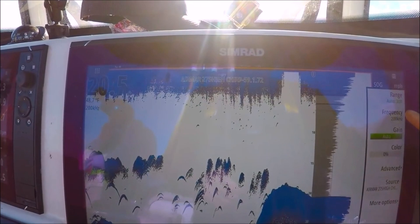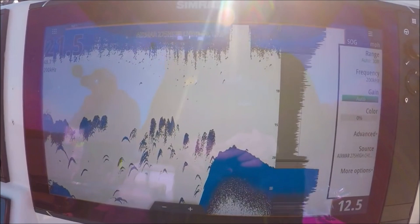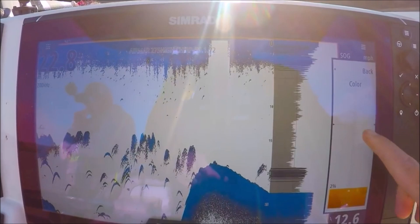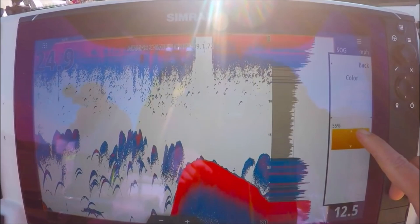Alright, with those all set, we're gonna back out here. Frequencies 200, we'll leave it at a single frequency for right now. My gain is set at auto, color is zero. I'm gonna go and turn my color up.